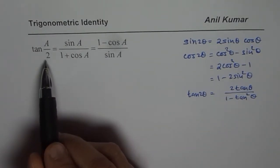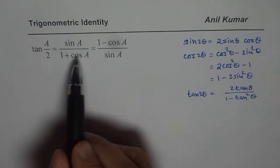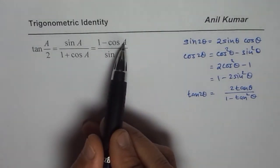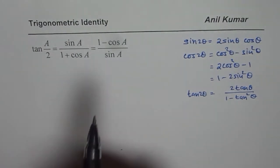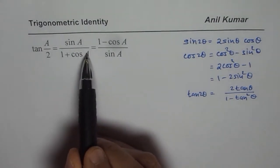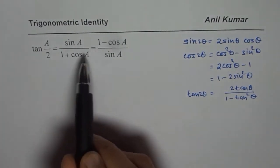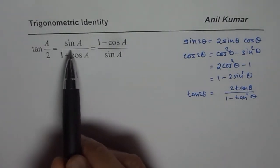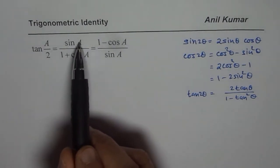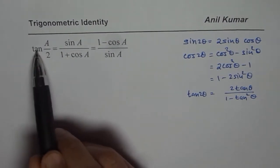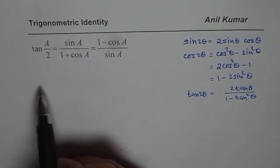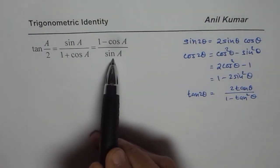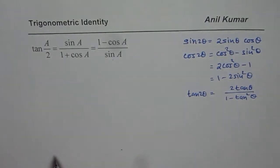The question says tan(a/2) equals sine a divided by 1 plus cos a, which is equal to 1 minus cos a over sine a. You will also find this particular question in your book and it is a very important question. What I will do here is prove that sine a divided by 1 plus cos a equals tan(a/2), and you can follow the same method to prove 1 minus cos a divided by sine a equals tan(a/2).